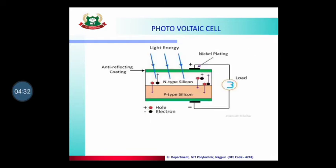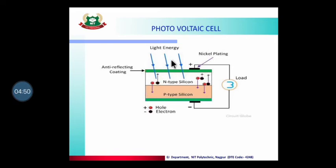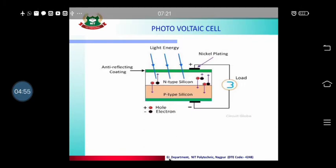This is the simple construction of a photovoltaic cell. It is made from P-type and N-type semiconductor materials. The material is wrapped in an anti-reflecting coating, which means light can easily pass through — it will not reflect. The light passes through and falls on the junction.